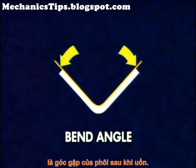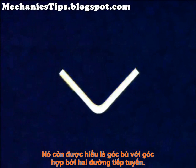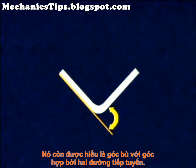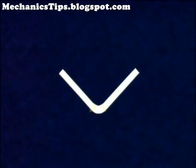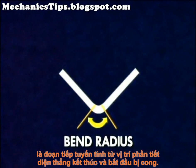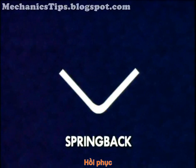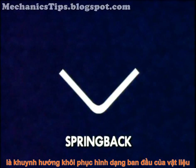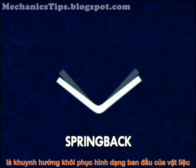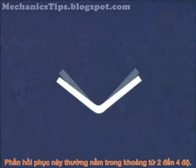The bend angle is usually the included angle of the bent workpiece. It can also refer to the supplementary angle formed by the two bent tangent lines. The bend radius is a tangent line where the flat, straight section of the part stops and the radius of the bend begins. Spring back is the tendency of the material to return to its original form, and typically ranges from 2 to 4 degrees.